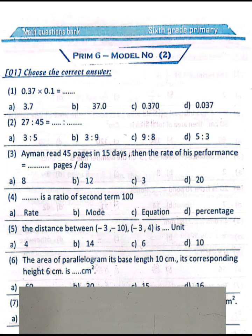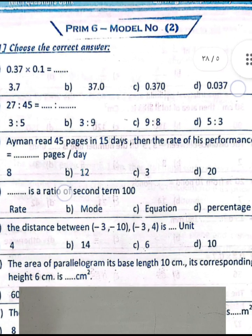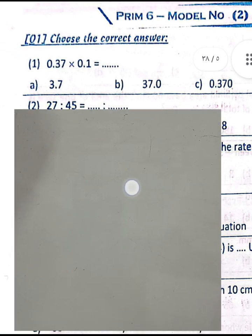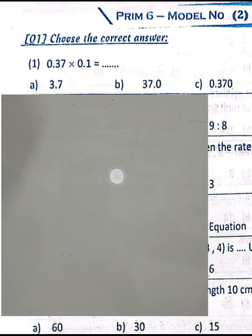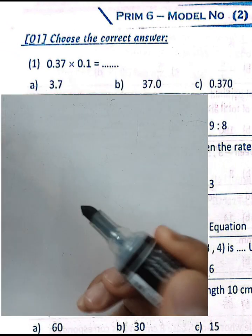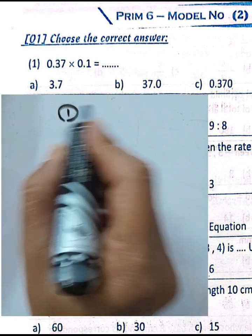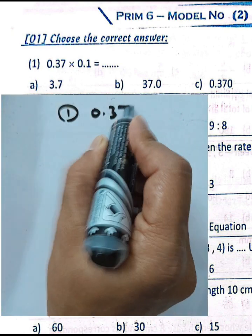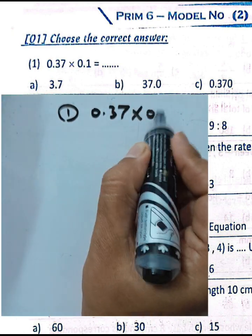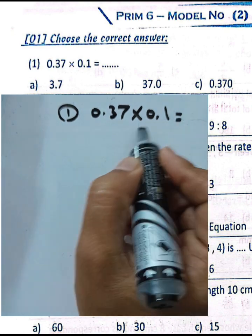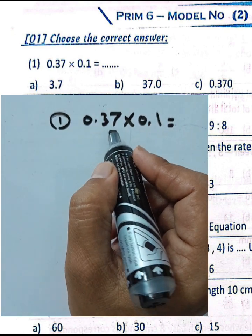We'll solve model number two from the questions bank. Question number one: choose the correct answer. Seventy-three hundredths multiplied by one-tenth.